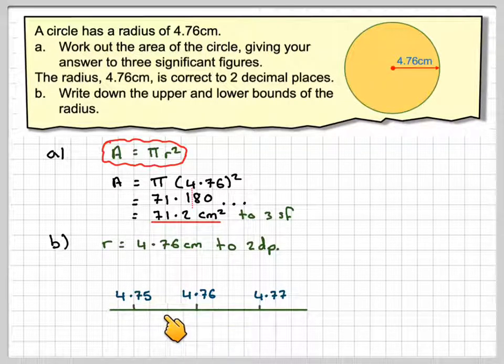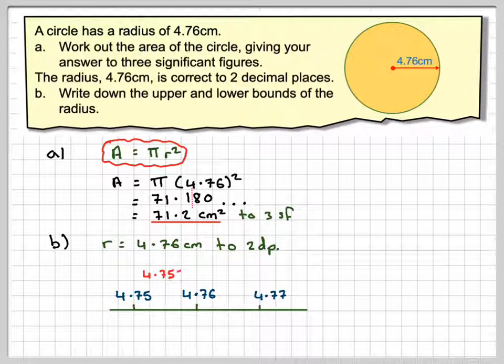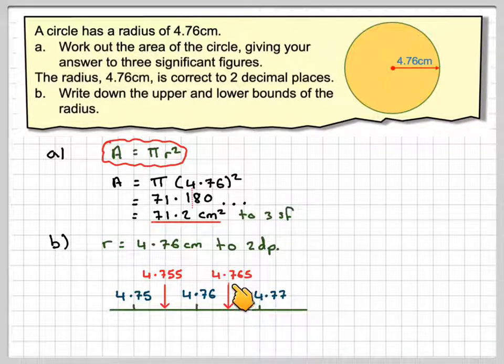It's halfway between here and here, because that will give me the lower bound. So the lower bound will have to be 4.755, and then this number here, halfway between this one and this one, will be the upper bound, which is 4.765.